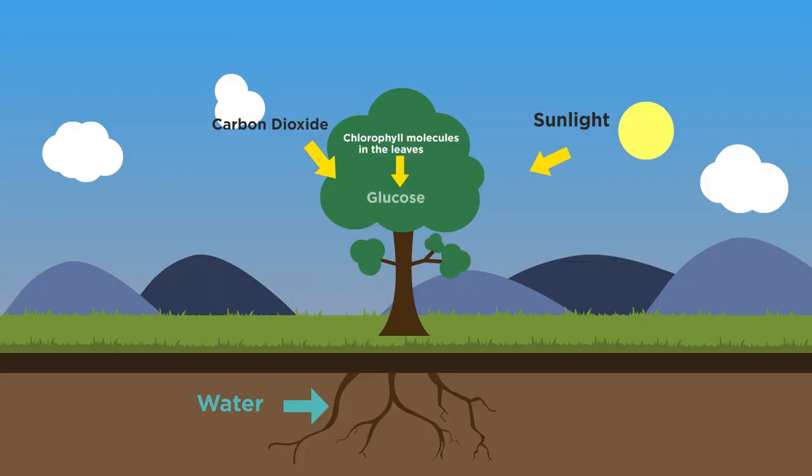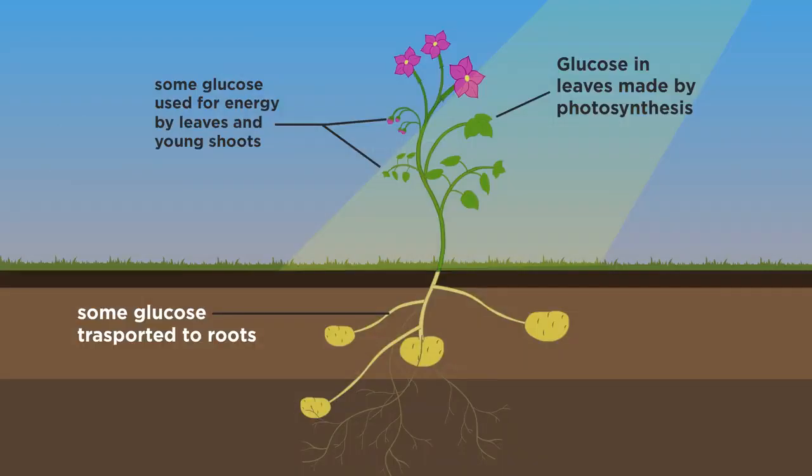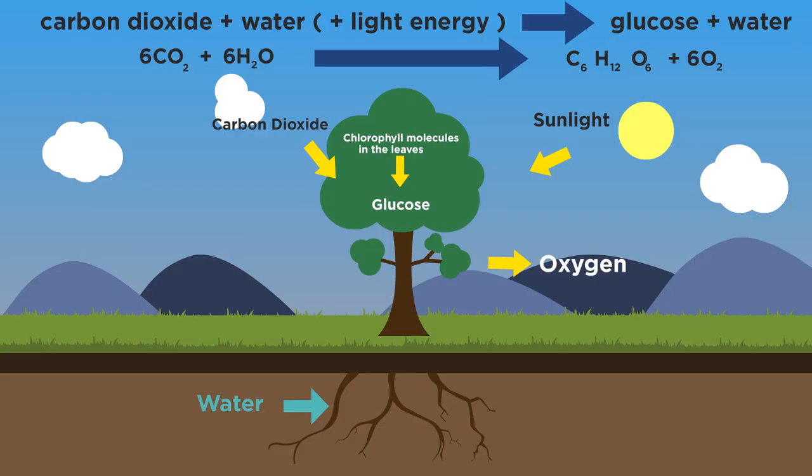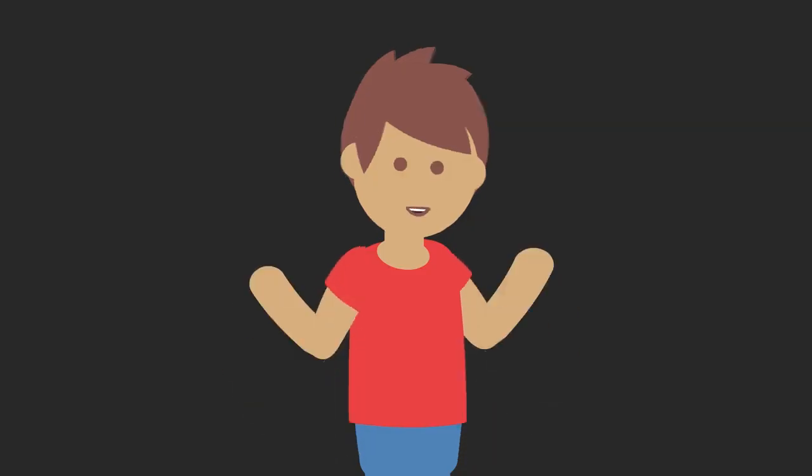What then happens? Glucose and oxygen are made. Some of the glucose is used for respiration and some is converted into insoluble starch. This can then be stored and turned back into glucose at a later stage. Oxygen is actually just a by-product of photosynthesis. There are some useful by-products in this world.